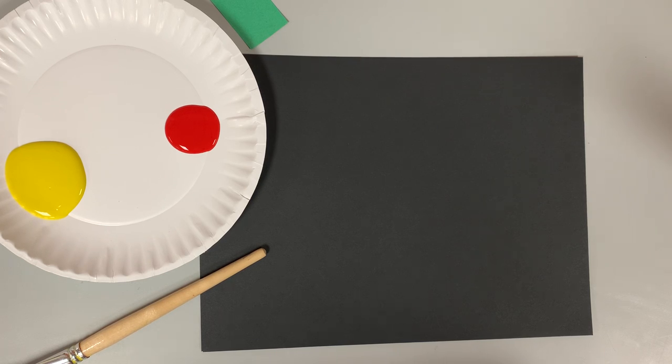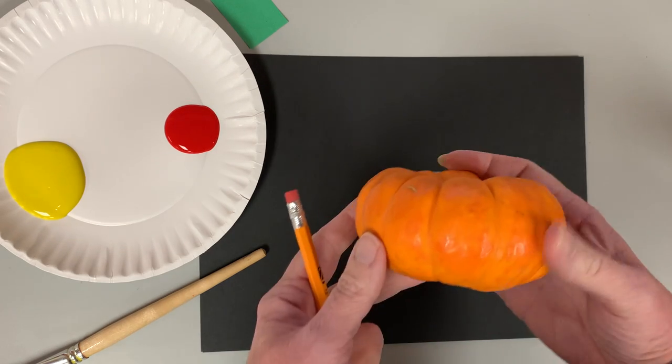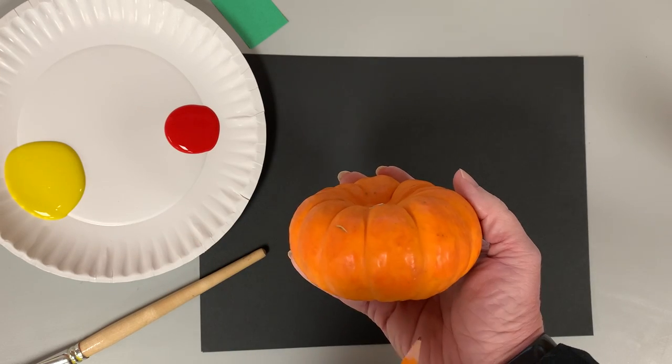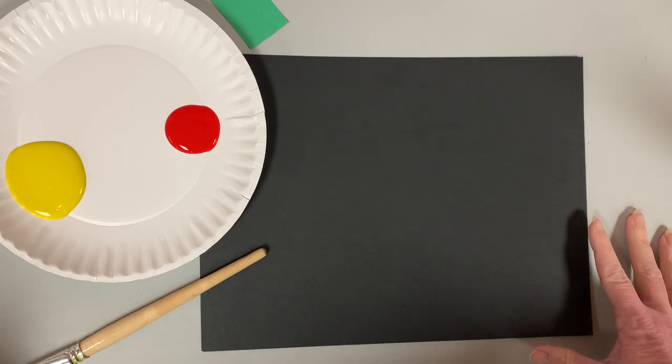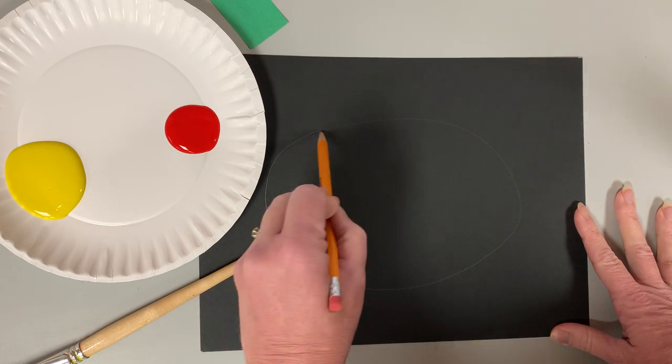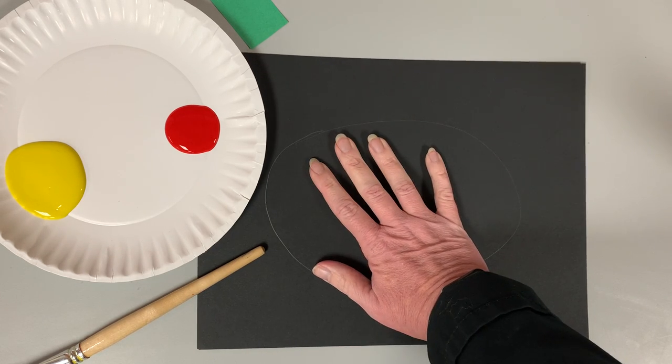We're gonna make a pumpkin today. I have a little pumpkin here, it's a short one but it's an oval type shape. We're gonna take our pencil and draw a big oval on your paper. It should be bigger than your hand.